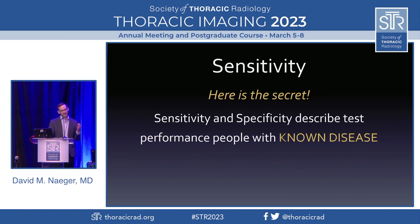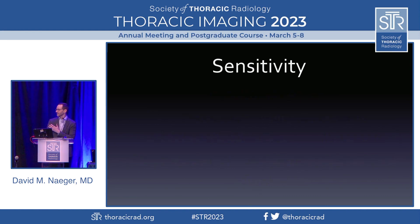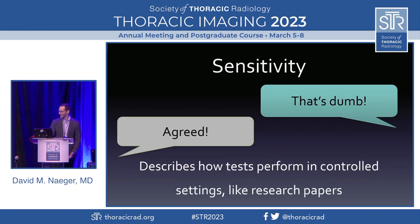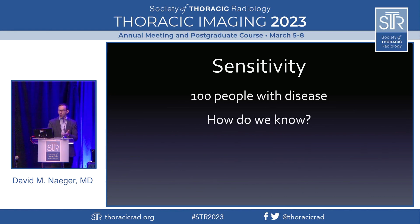Sensitivity and specificity are terms that only apply when you already know if the patient has the disease or not. If you're going to say a sentence, keep it clear: 'In someone who is known to have a disease or not...' You might say that sounds silly — why do I need a test characteristic that applies when I already know the answer? And I totally agree. This is used in controlled research settings with gold standards.